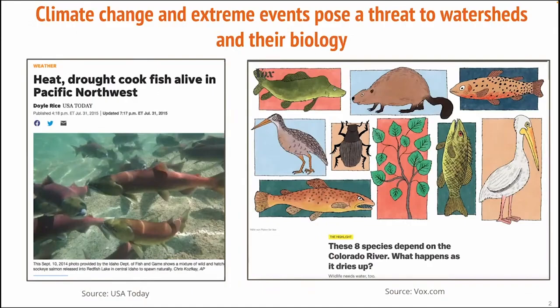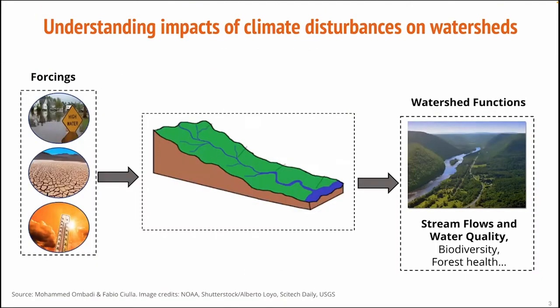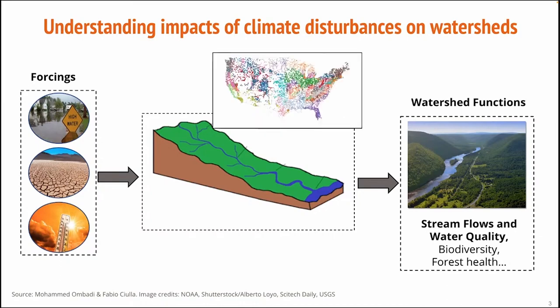Water is a fundamental substance needed for life on this planet to thrive. Unfortunately, our water resources are being stressed by climate change and extreme events such as heatwaves and droughts, which have consequences for the biology that depends on them. Our research investigates the impact of climate disturbances such as extreme rainfall, droughts, and heatwaves on water resources. Watersheds, which are the basic units for managing water resources, have many functions, including physical and chemical functions such as stream flows and water quality, as well as biological functions such as forest health and biodiversity. Our goal is to identify how diverse watersheds with different traits respond differently to disturbance across a range of spatial scales from hillslopes to watersheds to hydrologic basins and the continental United States.